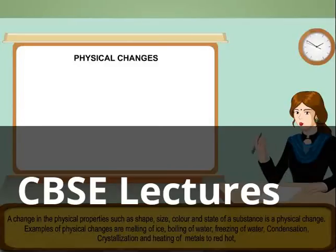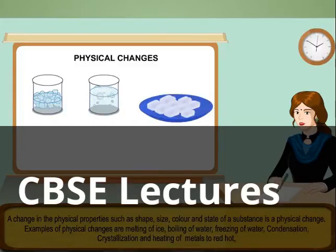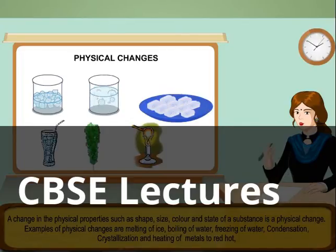Physical properties such as shape, size, color, and state of a substance constitute a physical change. Examples of physical changes are melting of ice, boiling of water, freezing of water, condensation, crystallization, and heating of metals to red hot, etc.